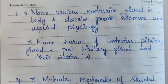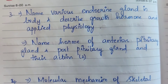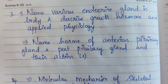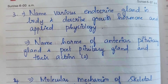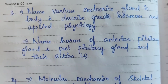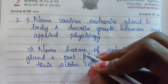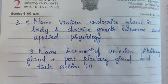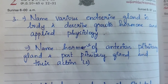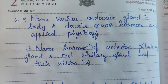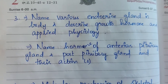Third question: Name various endocrine glands in the body and describe growth hormone and applied physiology — asked once. Name hormones of anterior pituitary gland and posterior pituitary gland and their actions — asked two times, for 15 marks.